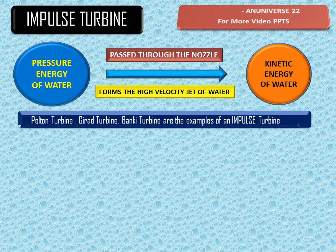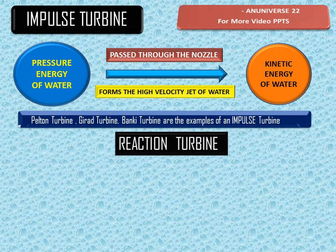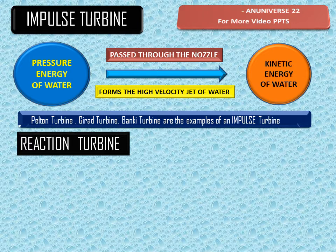Examples of impulse turbines are the Pelton turbine, Girard turbine, and Banki turbine. These are some examples of the impulse turbine.